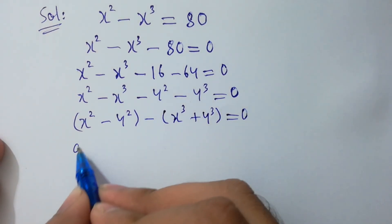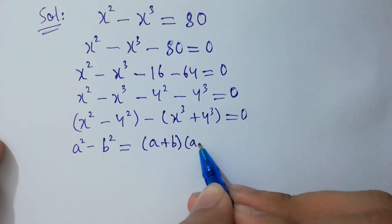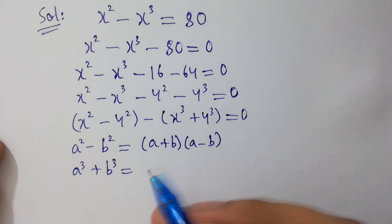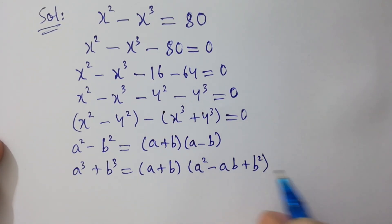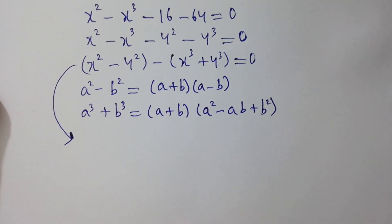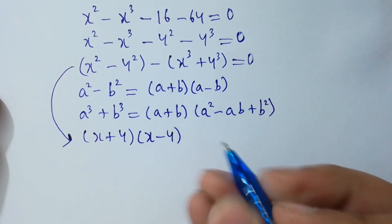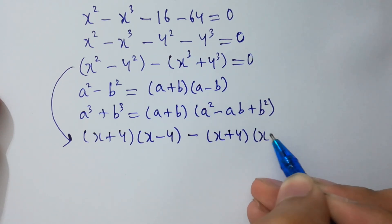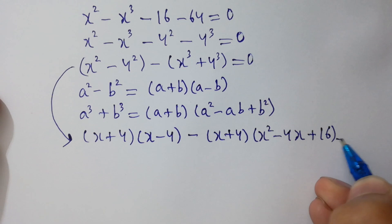Since a squared minus b squared equals (a plus b)(a minus b), and a cubed plus b cubed equals (a plus b)(a squared minus ab plus b squared), it will be equal to x squared minus 4 squared giving (x plus 4)(x minus 4), and x cubed plus 4 cubed giving (x plus 4)(x squared minus 4x plus 16), equals 0.